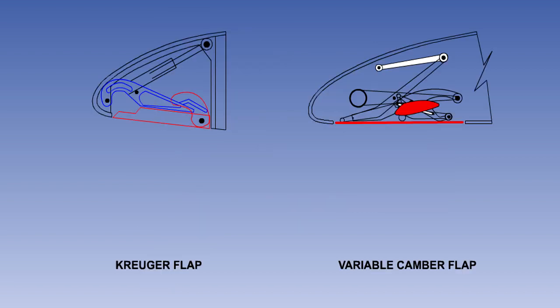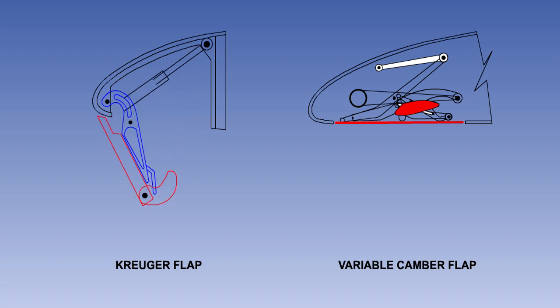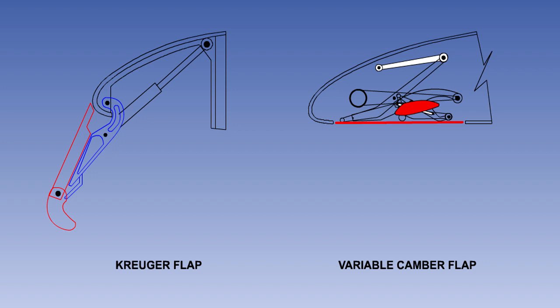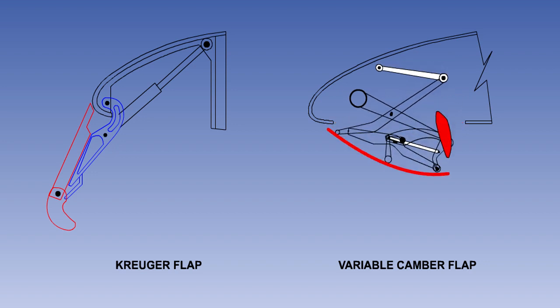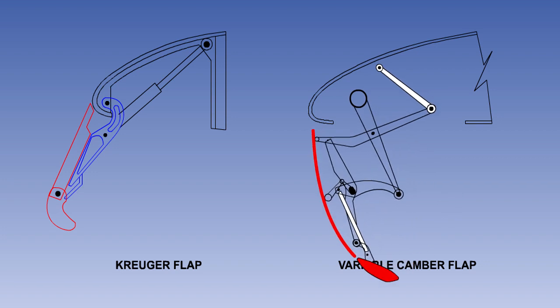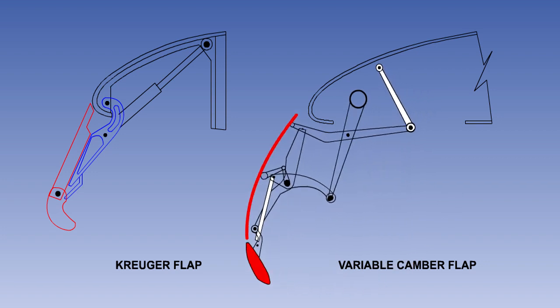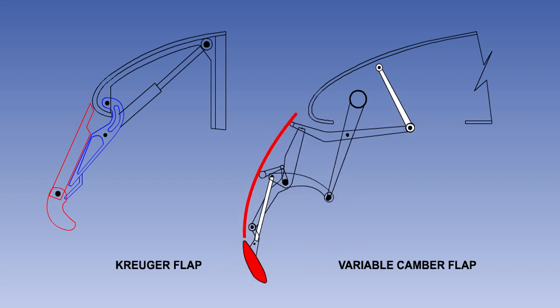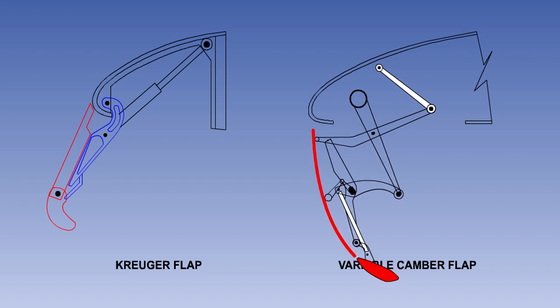Leading edge flaps are hinged surfaces that extend by rotating downward from the lower surface of the wing leading edge. They only have two positions: retracted and extended. The Kruger and the variable camber flap look the same from the outside when they are retracted — each is simply a flat panel on the bottom of the wing. When the Kruger flap extends, the panel maintains its flat shape. The variable camber flap, on the other hand, has a cam system which bends the panel into a curved aerofoil shape as it extends. The panel returns to its flat profile on retraction.